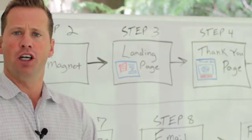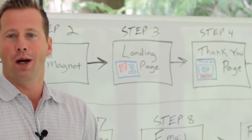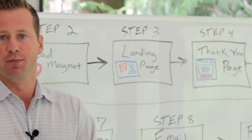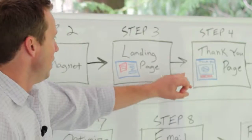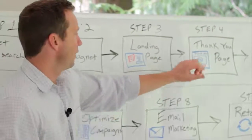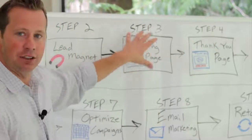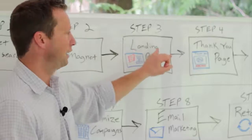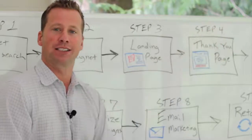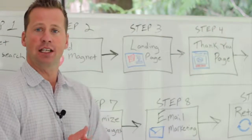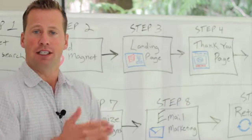This is also where you're going to put your conversion code and remarketing codes, or website custom audiences, which is basically Facebook's version of remarketing. In order to track conversions, you've got to have the conversion pixel on this page — not the landing page — because the only ones that actually count as a conversion are the ones that land on this page. We also want to have remarketing lists there so we can run campaigns targeting people that may have already opted in but haven't bought yet.